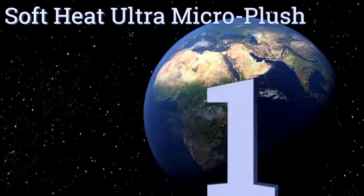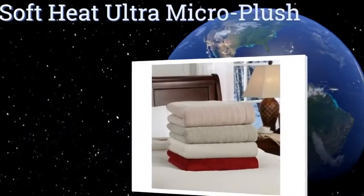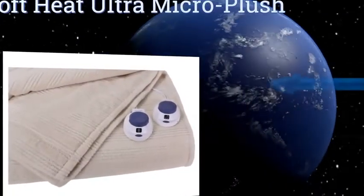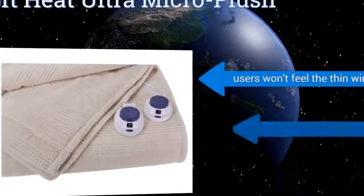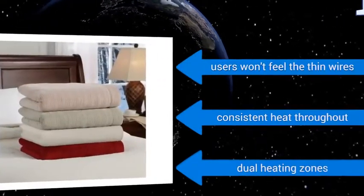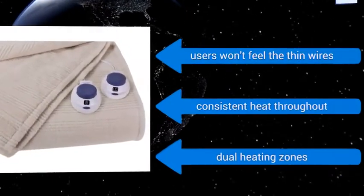And coming in at number one on our list, the Soft Heat Ultra Micro Plush is made out of 100% polyester that has a triple-ribbed design for added durability. This means it can be machine-washed and dried again and again without any peeling, stretching, or shrinkage. It's available in five color options. It features thin wires that users won't feel and consistent heat throughout with dual heating zones.